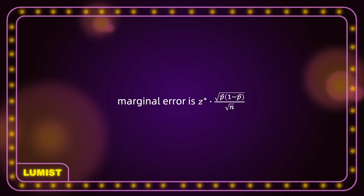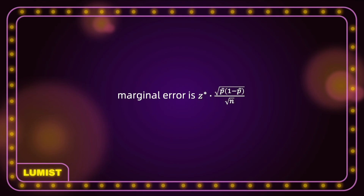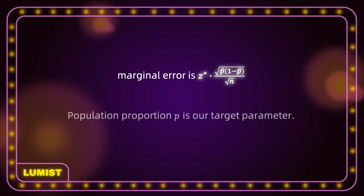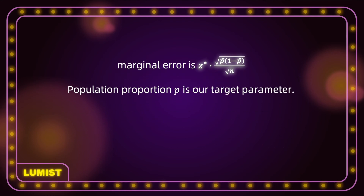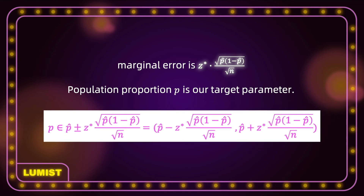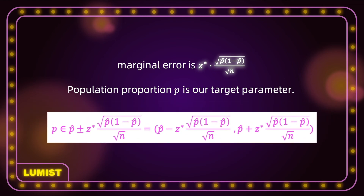Now let's talk about the margin of error. The margin of error is just z* multiplied by the estimated standard error. The population proportion p is our target parameter, and our confidence interval is given by p-hat plus or minus the margin of error.